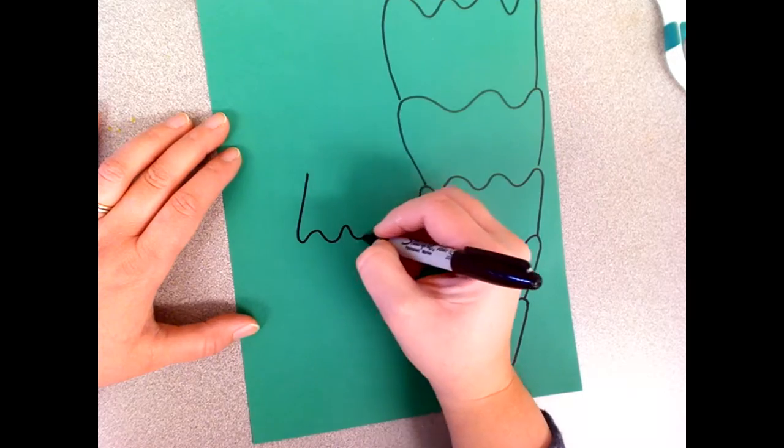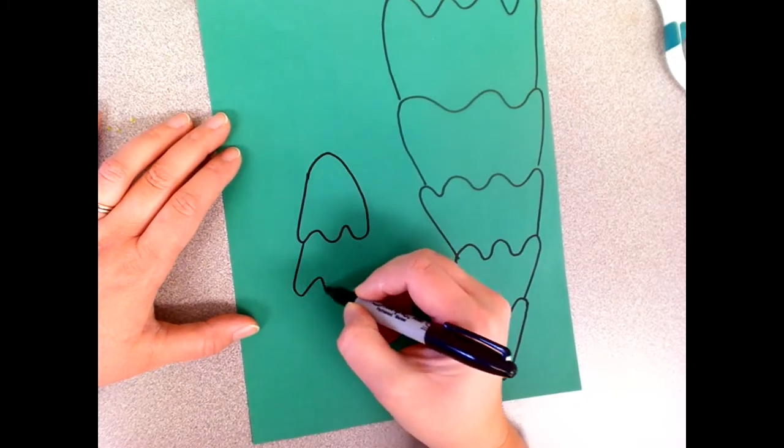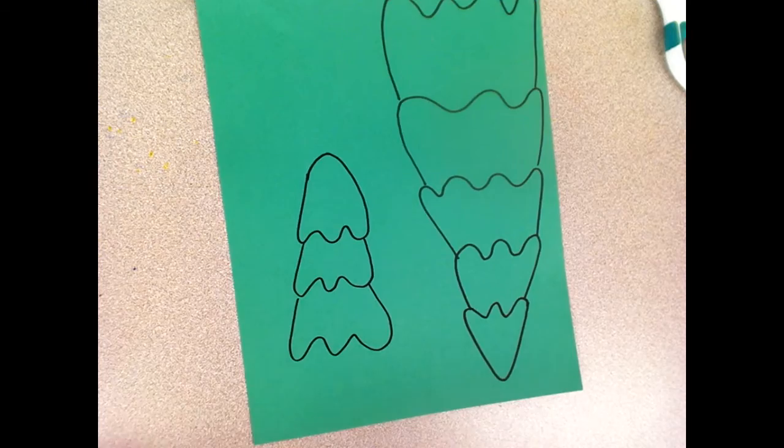Flip your paper over and draw your little tree doing the same thing, except only draw three or four sections instead.